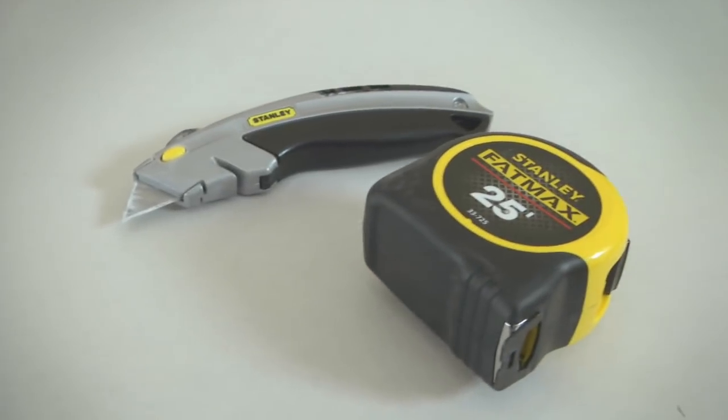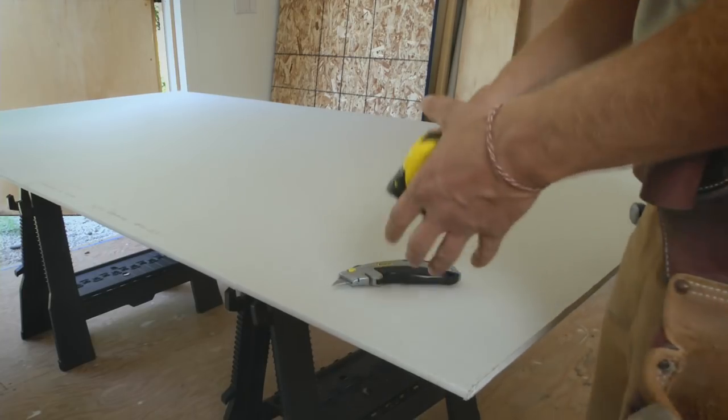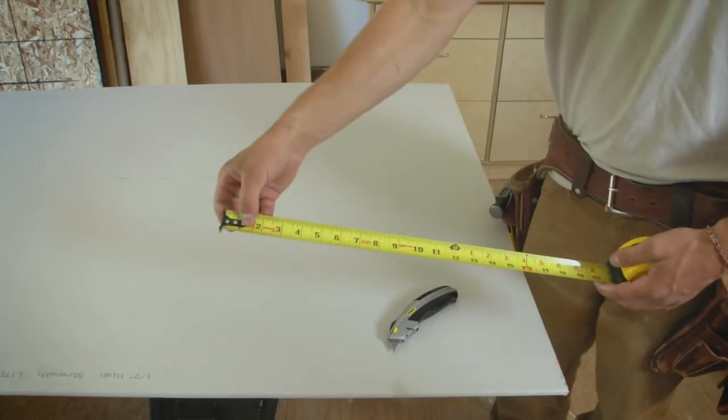You don't need a T-square to make a straight cut in drywall. Just pull your tape measure to the length or width of the piece you need.